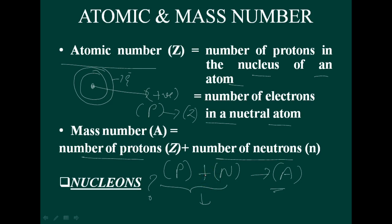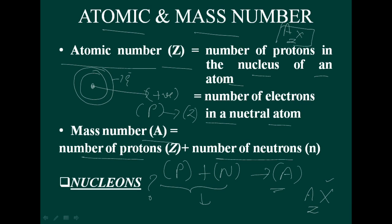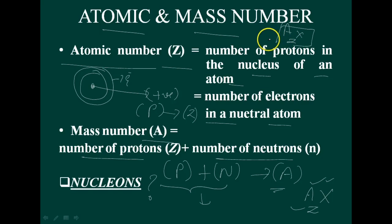Mass number, represented by A, and atomic number, represented by Z. An element is generally represented as A over Z X, where X is the symbol of the element, A is the mass number, and Z is the atomic number. Remember what is atomic number, what is mass number, and what are nucleons, and how they are represented.